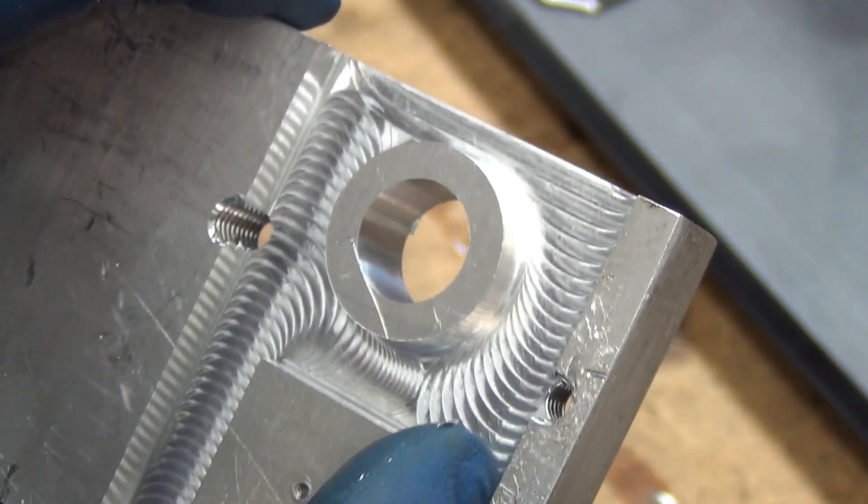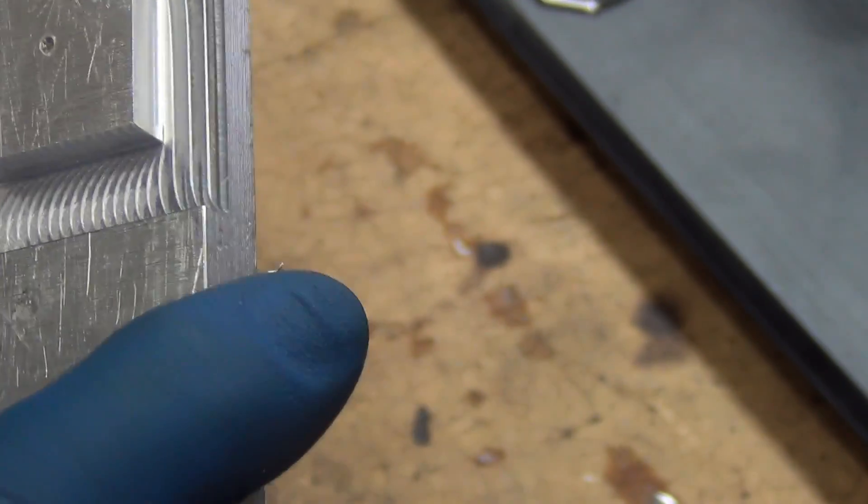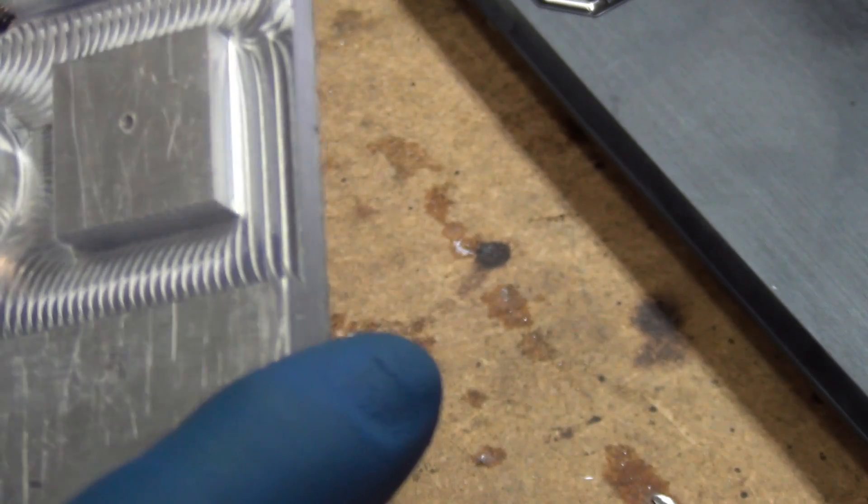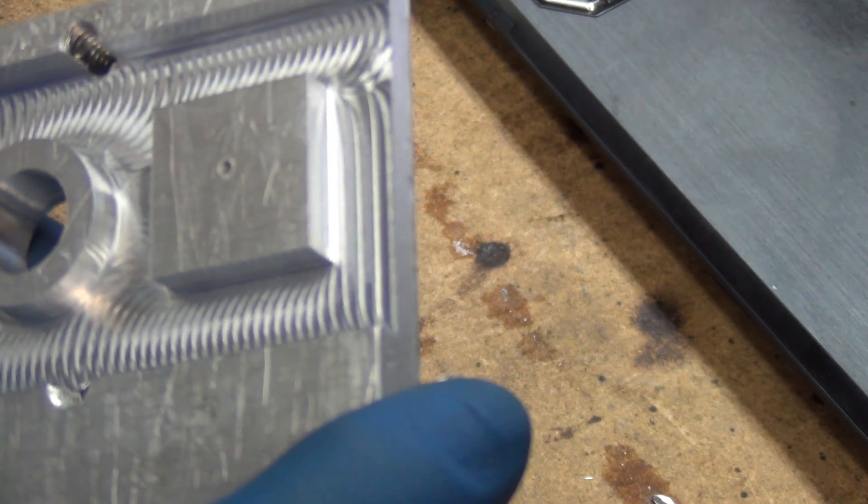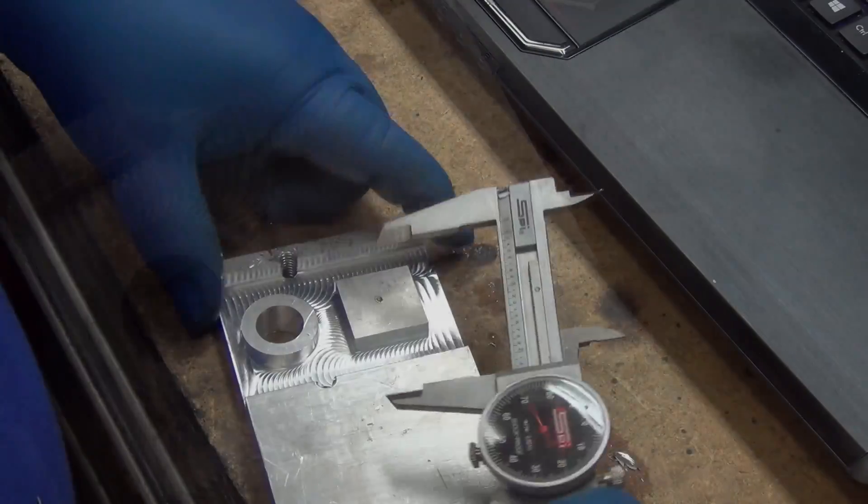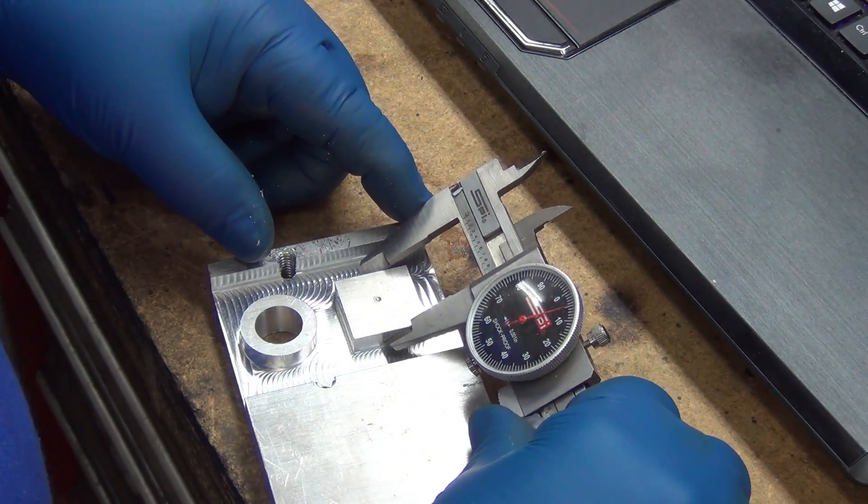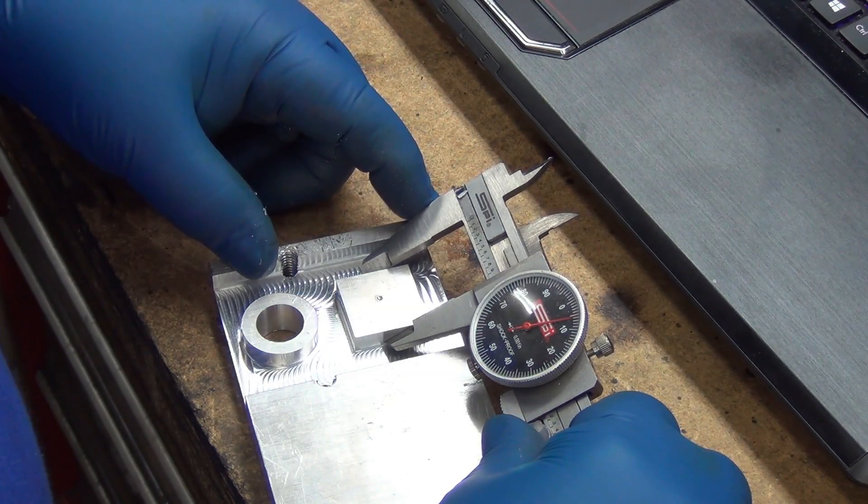You can feel the ripples in the bottom there a little bit. Not quite sure what's going on with that, looks pretty okay. Moment of truth: 1.005, 4 thousandths over. That's 2 thousandths over on the y-axis.